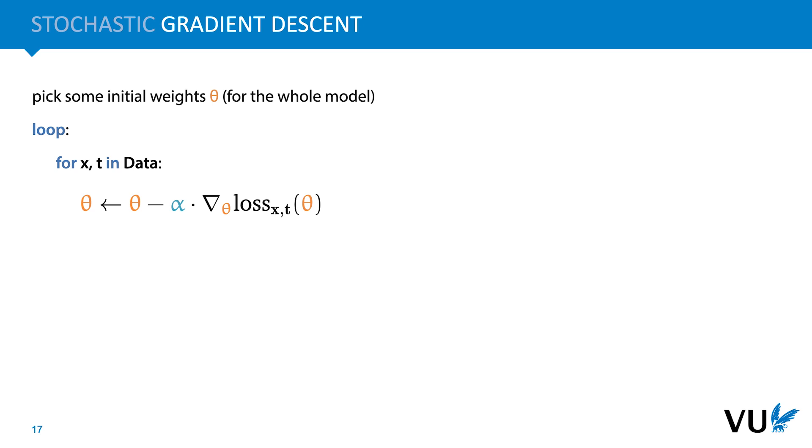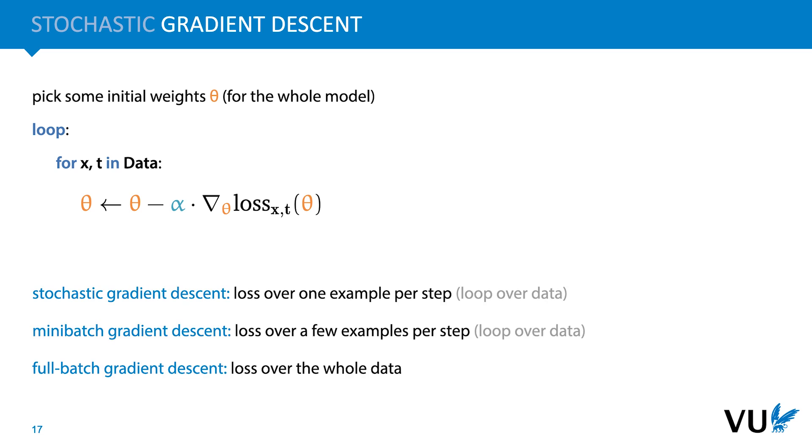We can compute the gradient of the loss with respect to a single example for our dataset, a small batch of examples, or over the whole dataset in one go. These options are usually called stochastic, mini-batch, and full-batch gradient descent respectively. Note, however, that these terms are used interchangeably in the literature, but we'll try to stick to these definitions in the course.